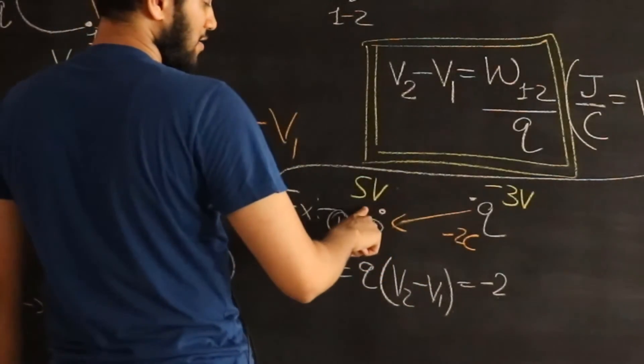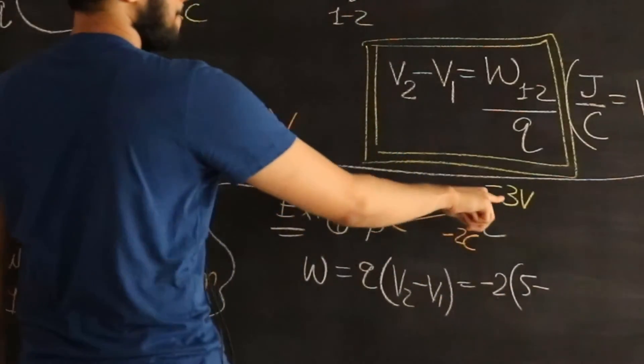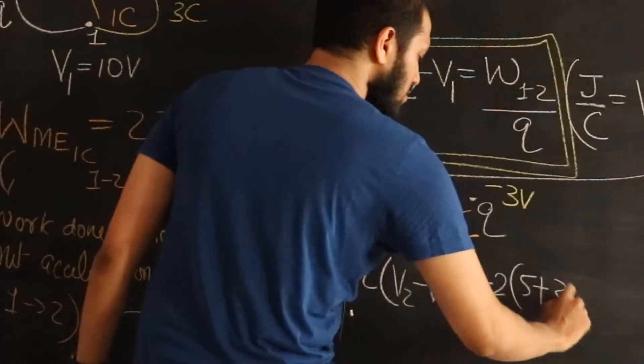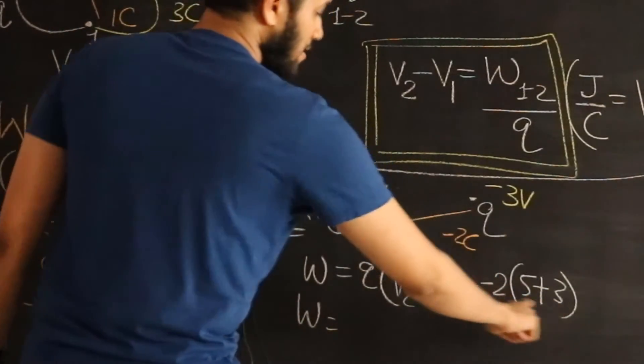And V2 is the final potential. 5 minus minus 3. Plus 3. So the work that I end up doing is a negative one. 8 times 2. I end up doing minus 16 joules of work.